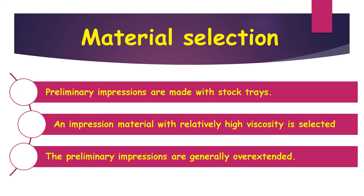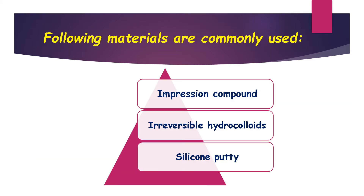Regarding material selection, preliminary impressions are made with stock trays. An impression material with relatively high viscosity is selected, allowing the material to compensate for any deficiencies in the tray. Preliminary impressions are generally overextended. The following materials are commonly used: impression compound, irreversible hydrocolloids, and silicone putty.